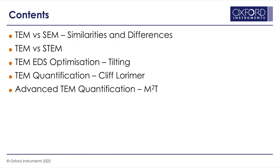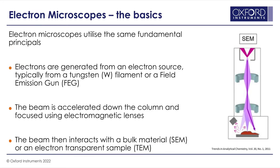In today's presentation I'll pick up where I left off on my previous tutorial and start looking at TEM as a technique compared to SEM. I'll highlight some of the similarities and differences between the two different electron microscopes, then focus on TEM, looking at the difference between TEM and STEM, how we can optimize our TEM acquisition, TEM quantification using the Cliff-Lorimer approach, and our advanced TEM quantification routine known as M squared T. I won't be touching much on the basics of electron microscopes and EDS analysis as we went through that in the previous tutorial.